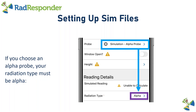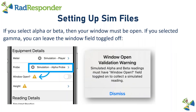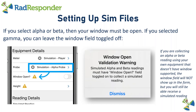Now I have my correct radiation type matching what my probe can measure. If you select an alpha or beta probe, your window must be open. If you've selected gamma, you can leave the window field toggled off. You'll receive a warning icon if you do not have the window field defined in the details of that piece of equipment — but that is only if you are using your organization's equipment without the window field configured. You'll still be able to receive a simulated reading.